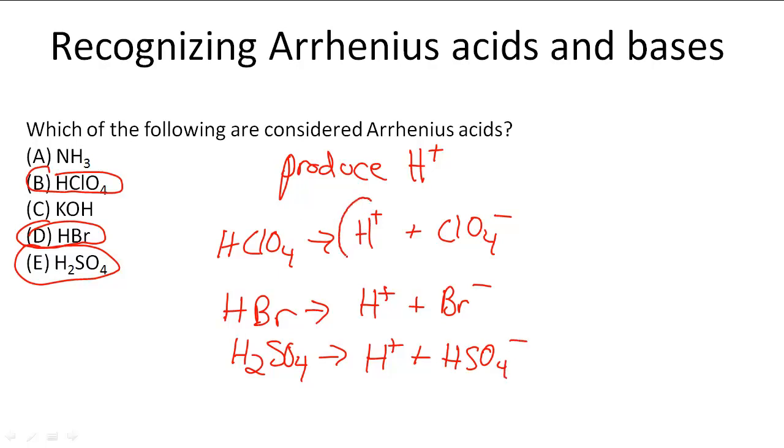And so all of them produce the hydrogen plus ion, so that is an Arrhenius acid. So B, D, and E are answers to this question.